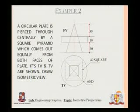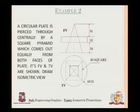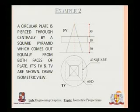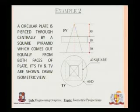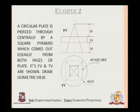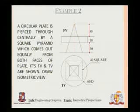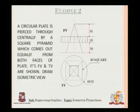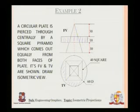Let's move on to the second problem. A circular plate is pierced through centrally by a square pyramid which comes out equally from both faces of the plate. Its front view and top view are shown — draw the isometric view. So there is a circular plate — this whole area is a circular plate.